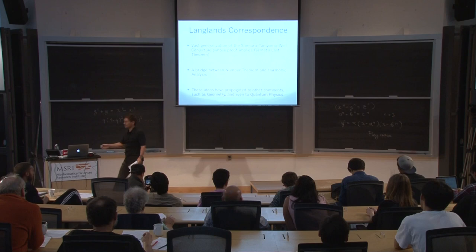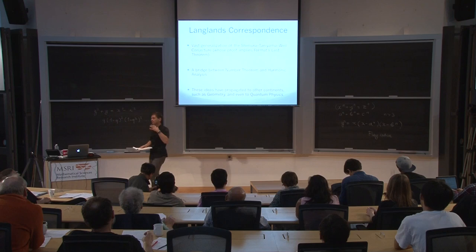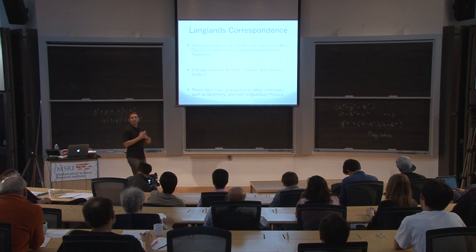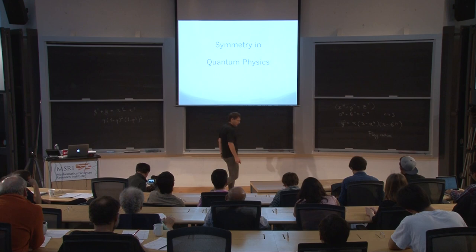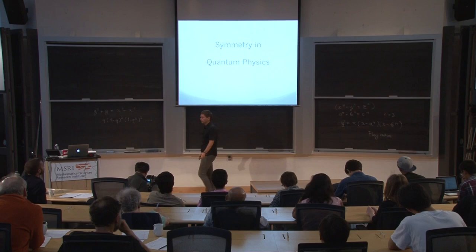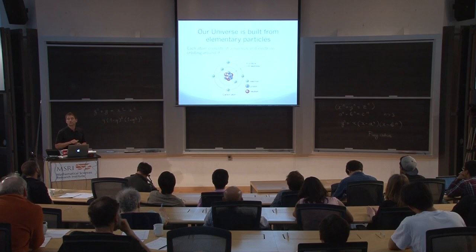Now you see the big picture: not only how the Shimura-Taniyama-Weil conjecture appears as a special case of the Langlands program, but also how Fermat's Last Theorem is a corollary — something implied by the Shimura-Taniyama-Weil conjecture. But let's go back to the main line of discussion: I would like to show you how symmetry works out in quantum physics, which goes back to the structure of atoms and elementary particles.